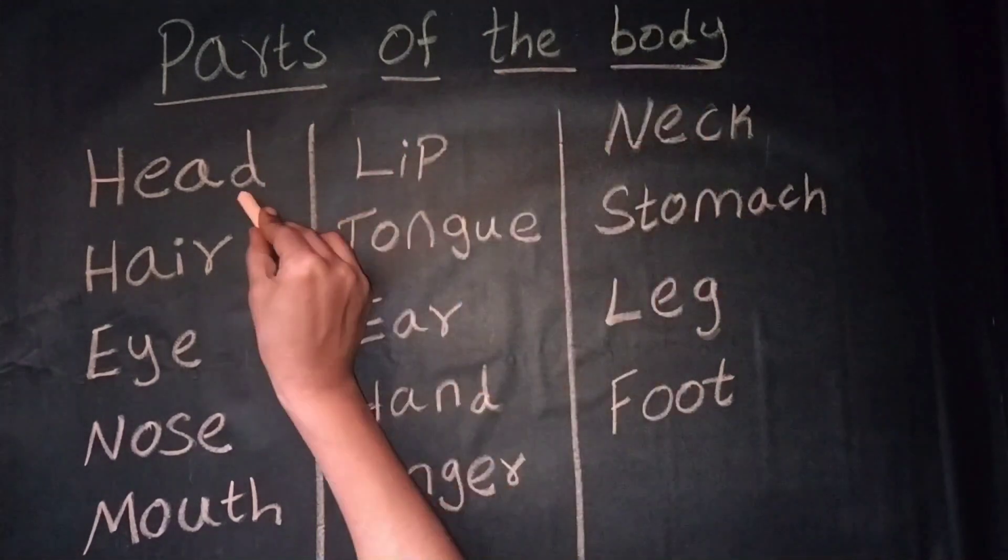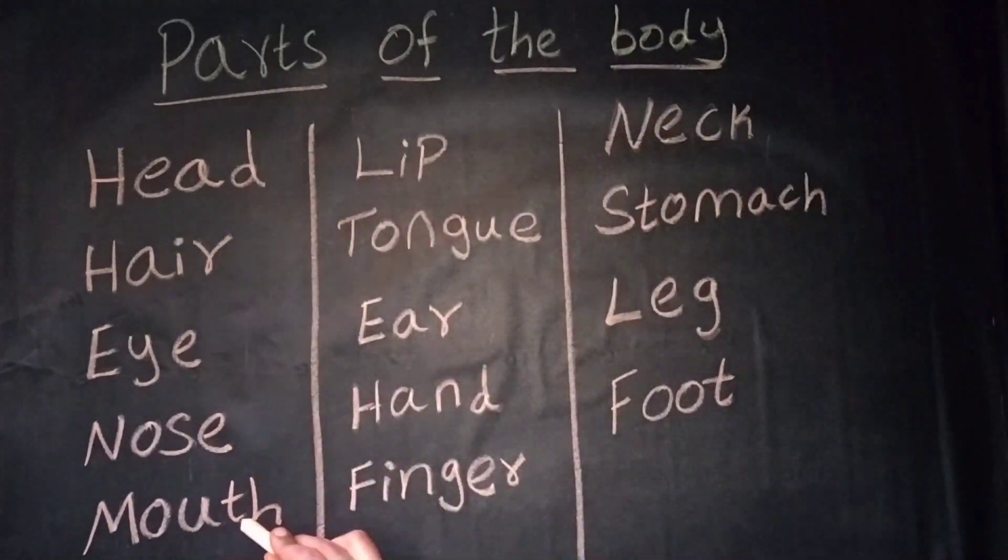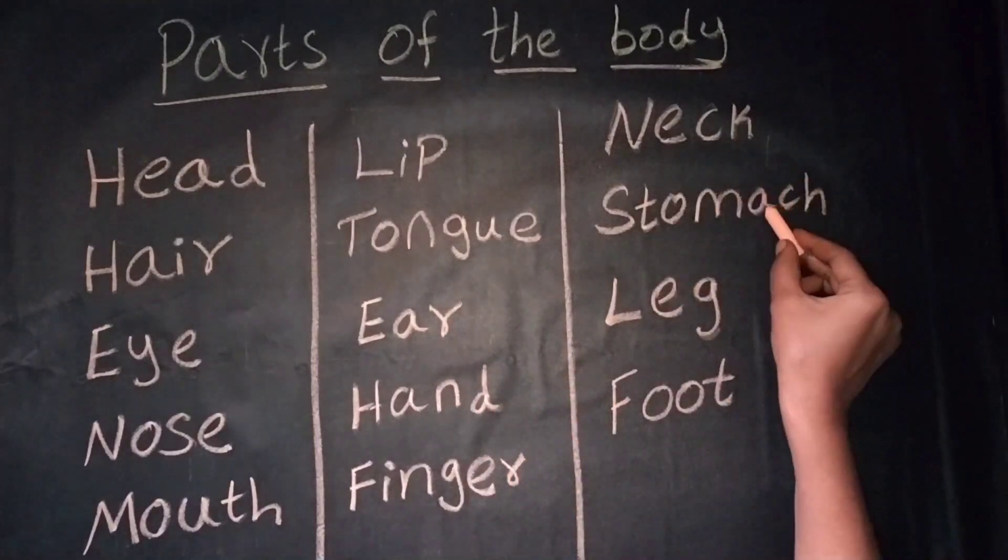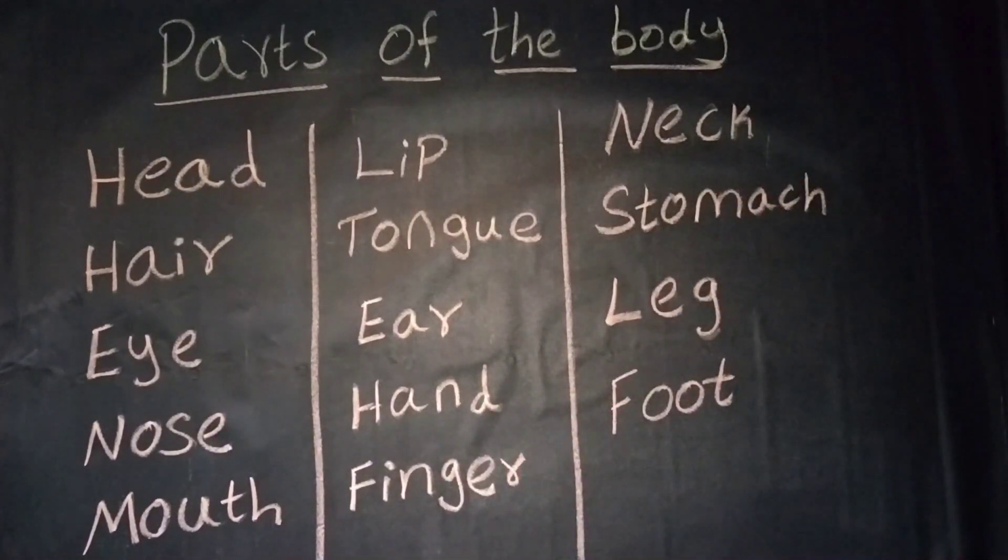parts of the body: head, hair, eye, nose, mouth, lip, tongue, ear, hand, finger, neck, stomach, leg, foot.